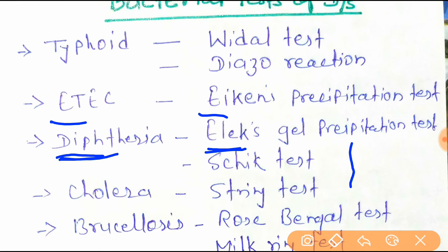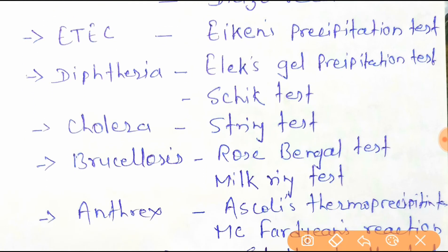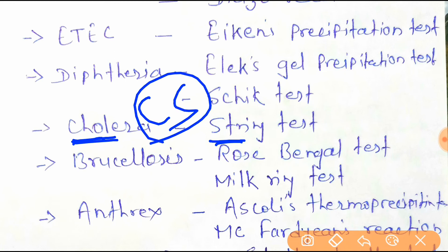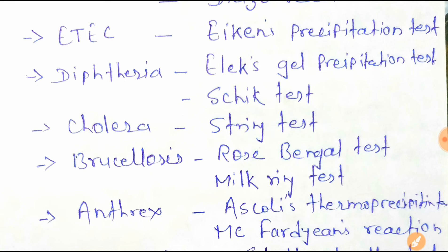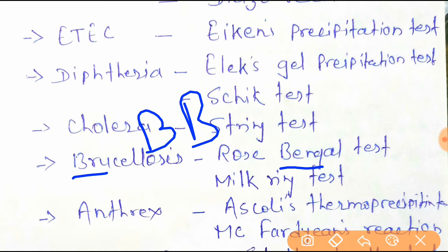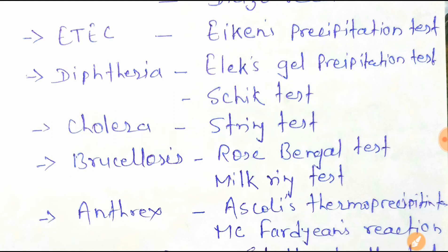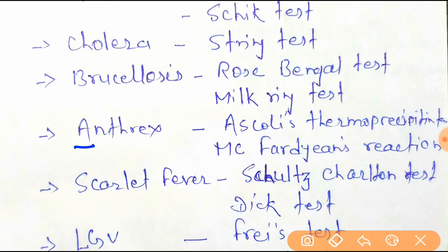Cholera is the string test — you can remember 'cool string' for cholera. Next is brucellosis — remember 'B for Bengal, M for milk ring test.' So for brucellosis: Rose Bengal test and milk ring test.